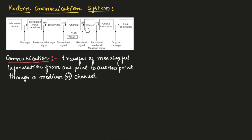The transmitted signal passes through the channel and the receiver will receive it. The signal received from the transmitter is known as the received signal, and its output will be a baseband or message signal. That message signal is given as input to the output transducer, which provides the original message to the final destination.